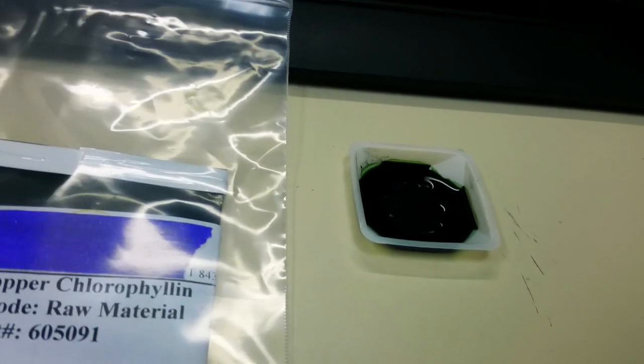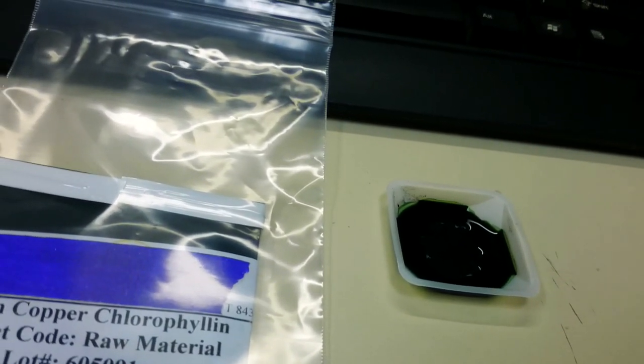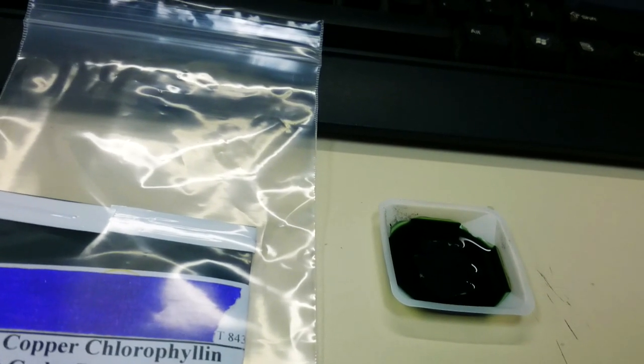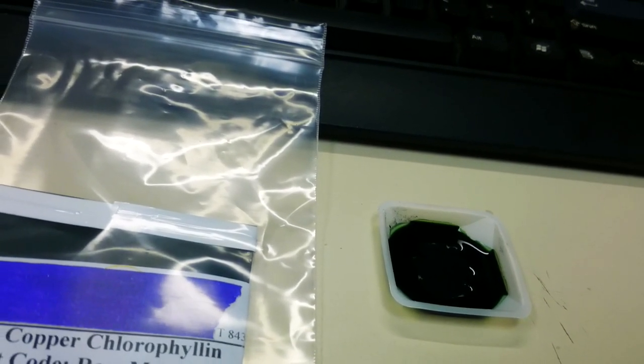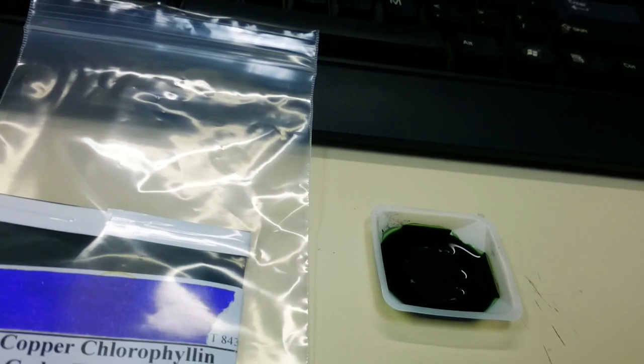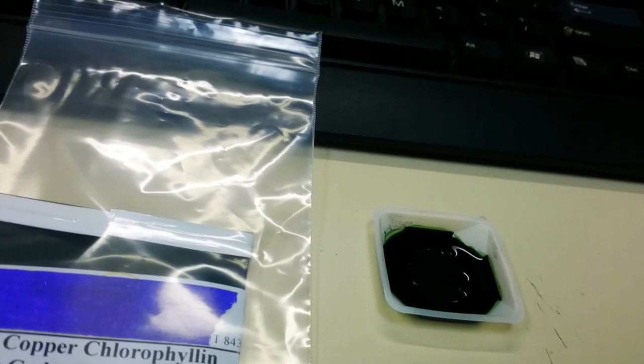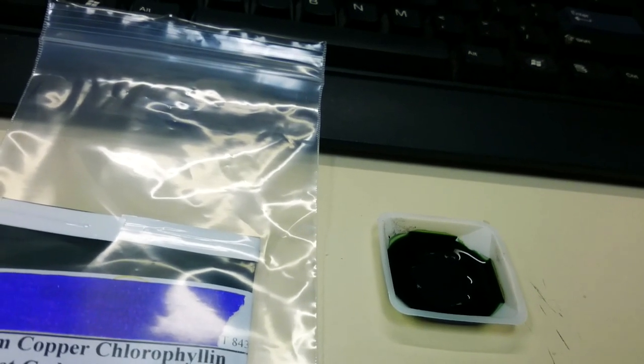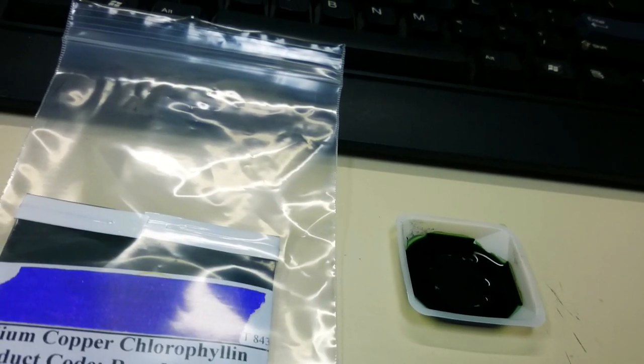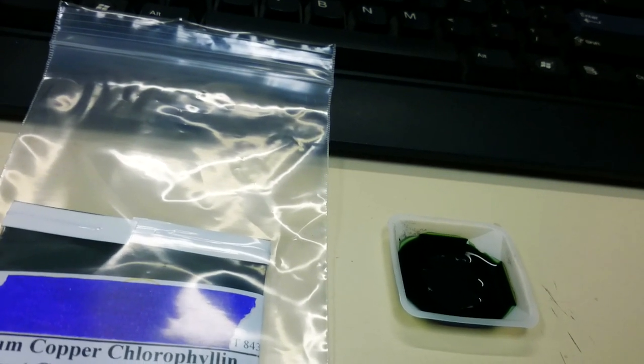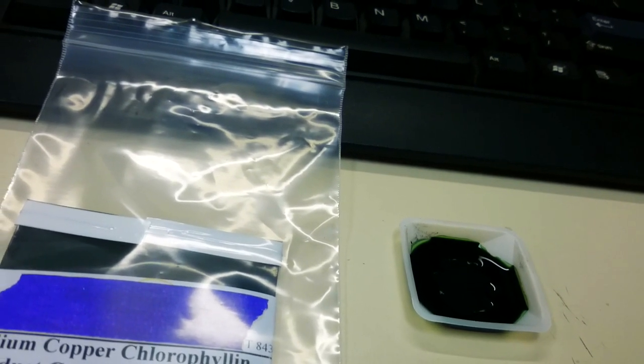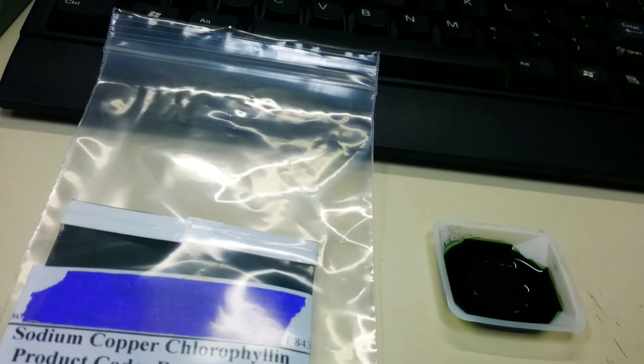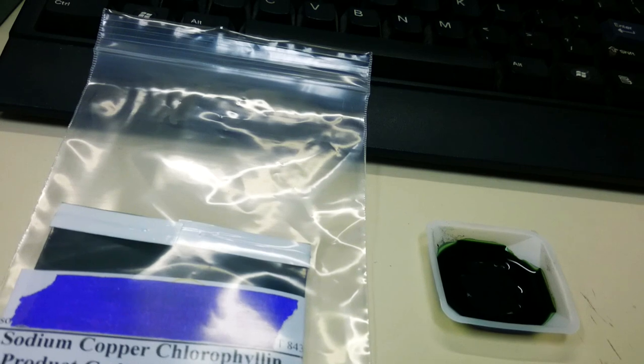From the Food and Drug Administration, it says the color additive sodium copper chlorophyll is a green to black powder prepared from chlorophyll by saponification and replacement of magnesium by copper. Chlorophyll is extracted from alfalfa using any one or a combination of the solvents acetone, ethanol, and hexane.